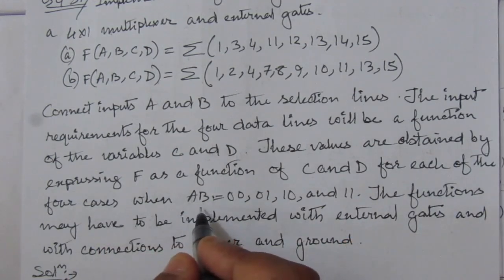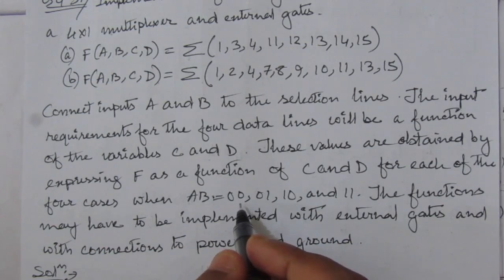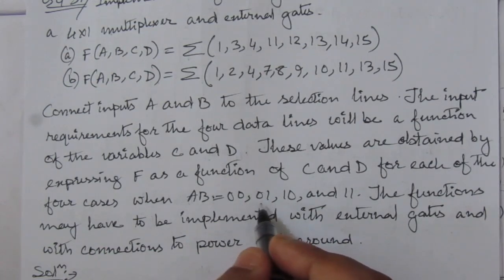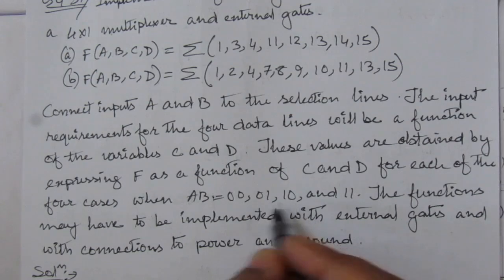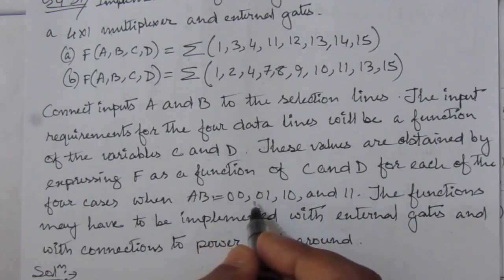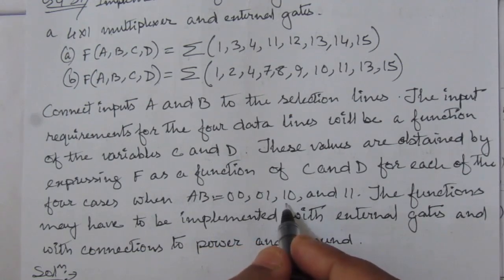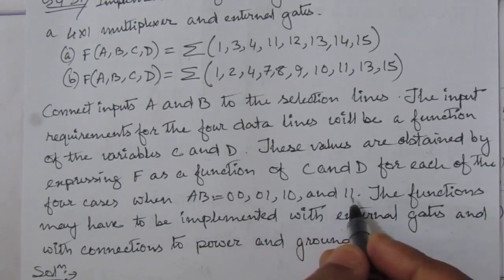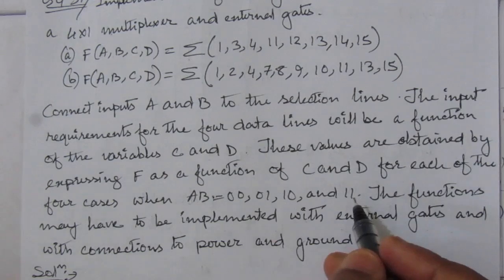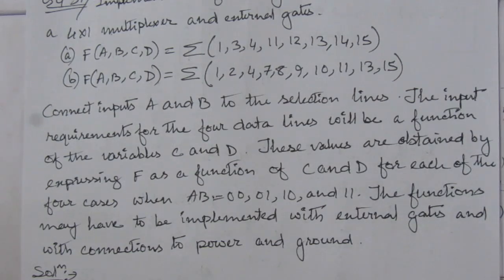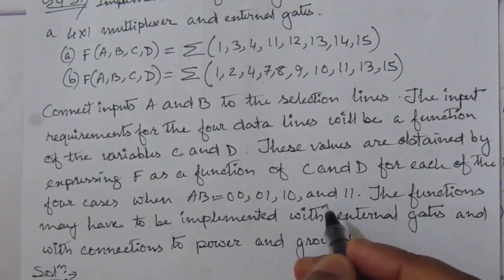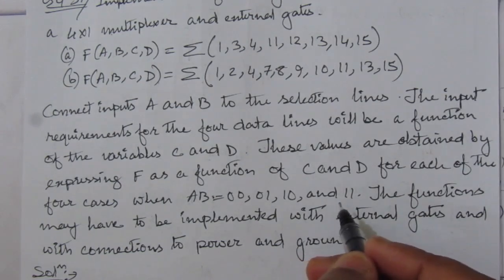For each of these cases — for AB equal to 00, then for AB equal to 01, that is A equal to 0 and B equal to 1, next case will be 1 and 0, and then 1 and 1 — that means we will have 4 cases. From that we have to find out the output relation with C and D, that is the output function F in terms of C and D.